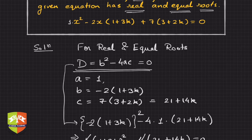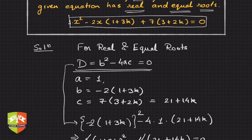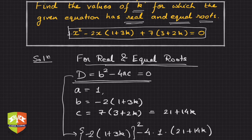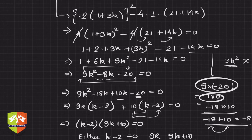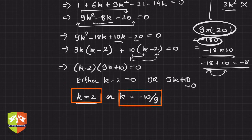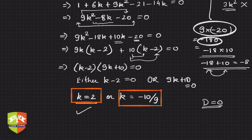So this is how you solve it. What we did was apply the condition that the discriminant must equal zero, then put the values of a, b, and c. With the condition D equals zero we figured out the value of k, which came out to be k equals 2 and k equals minus 10 over 9. This is how you solve these kinds of questions.